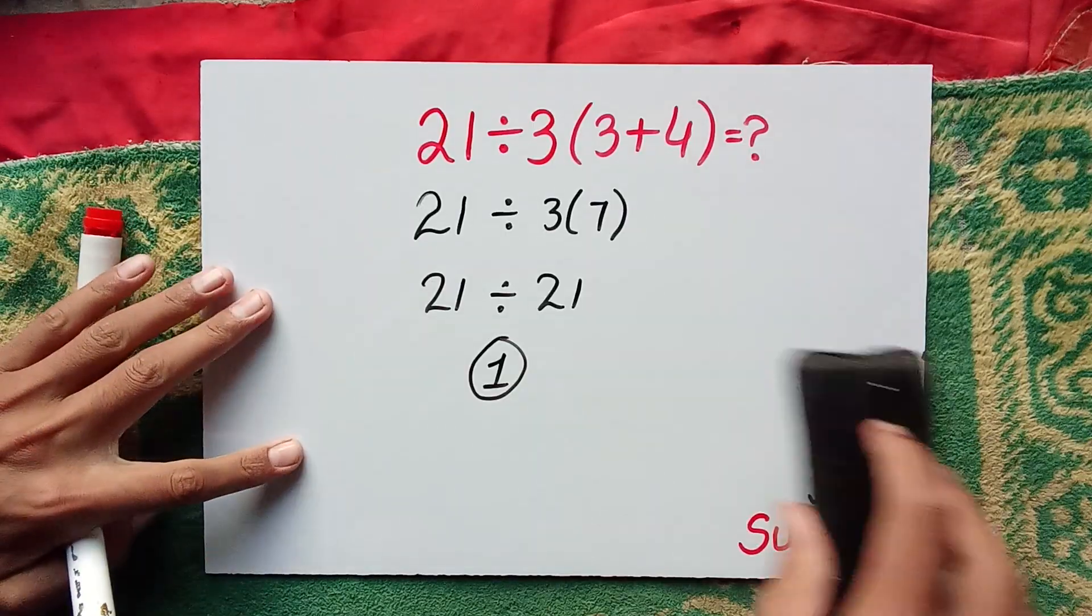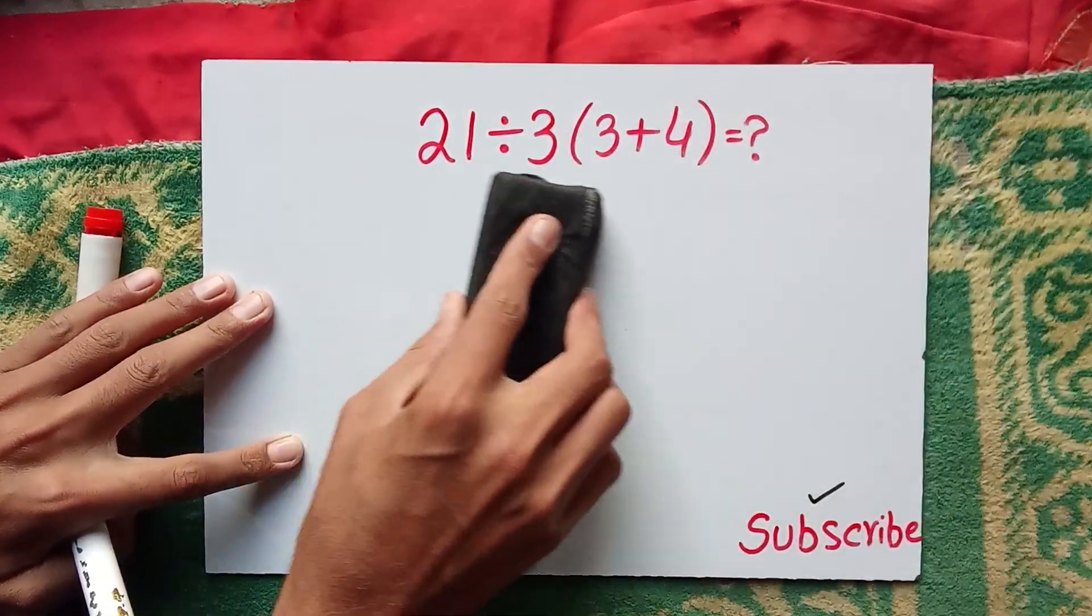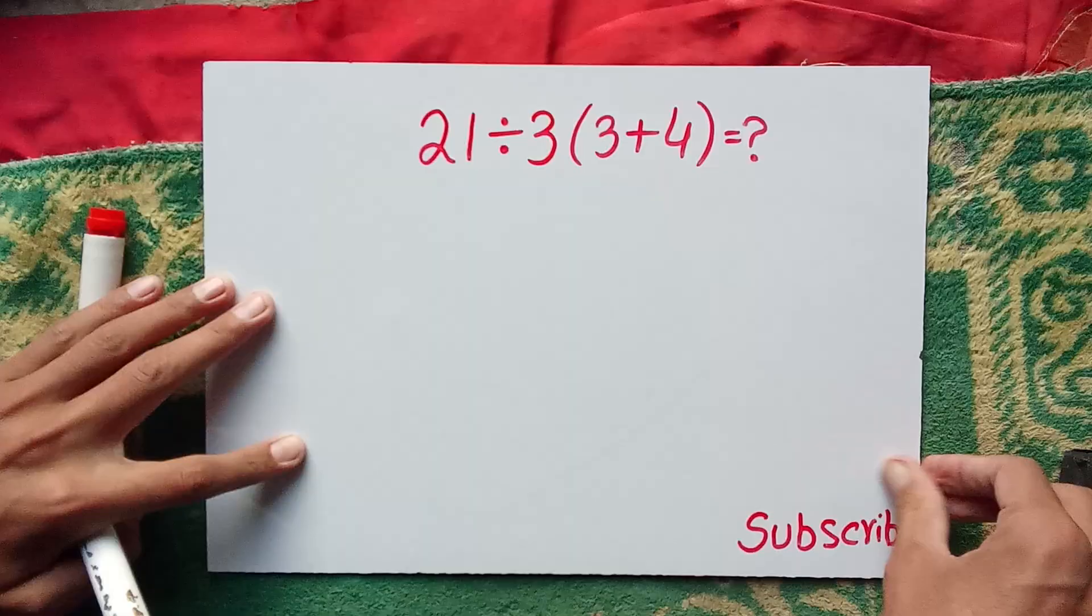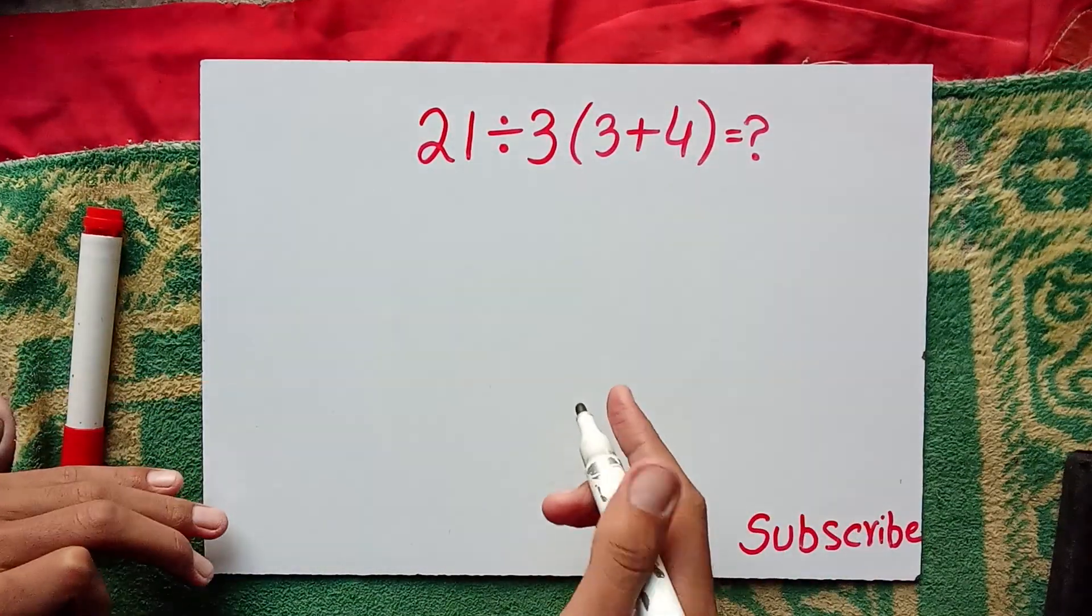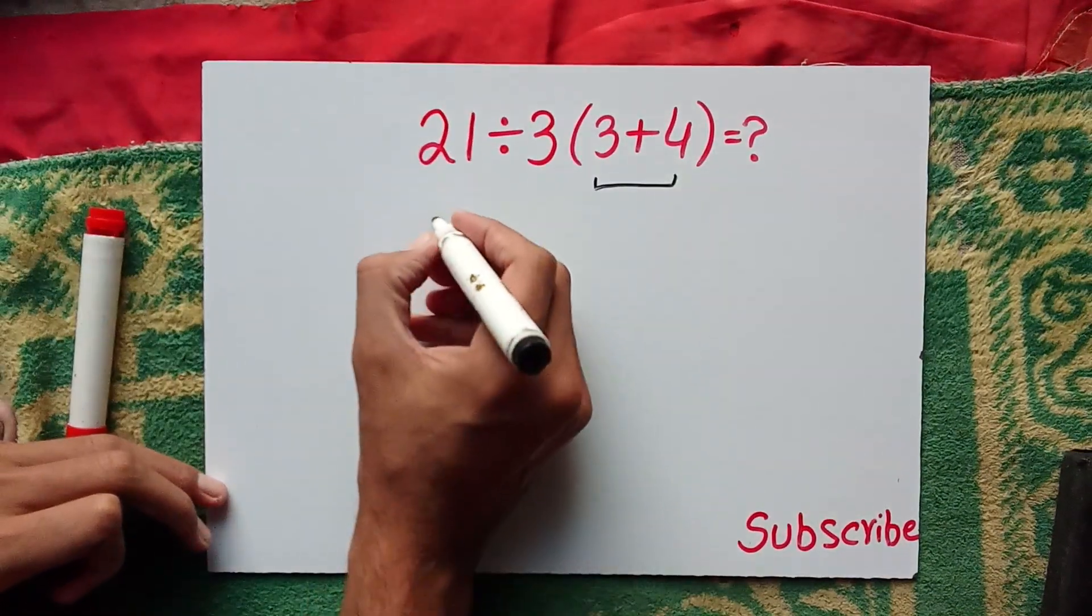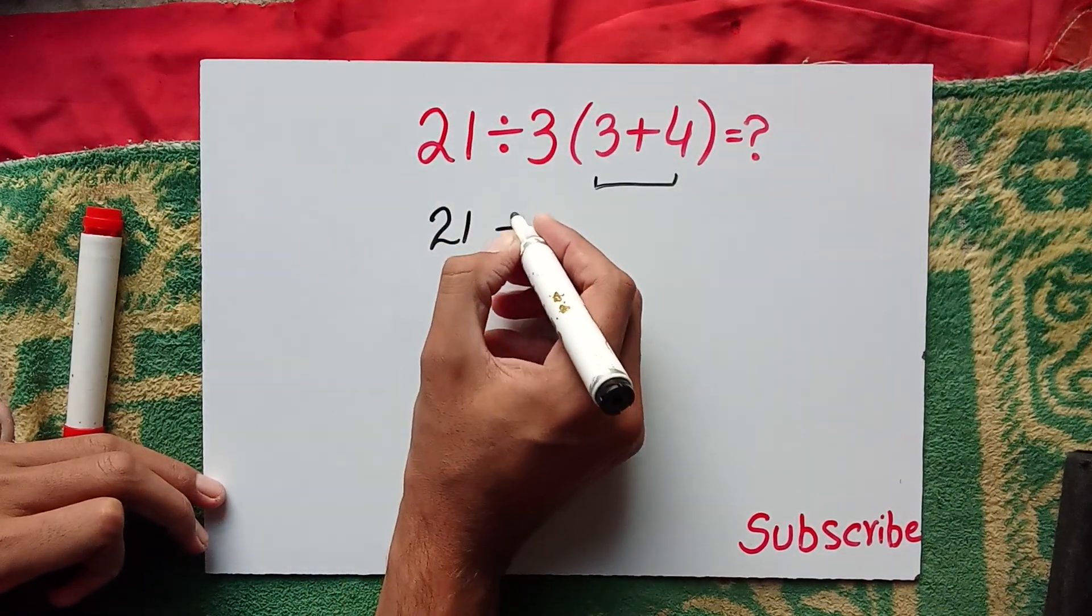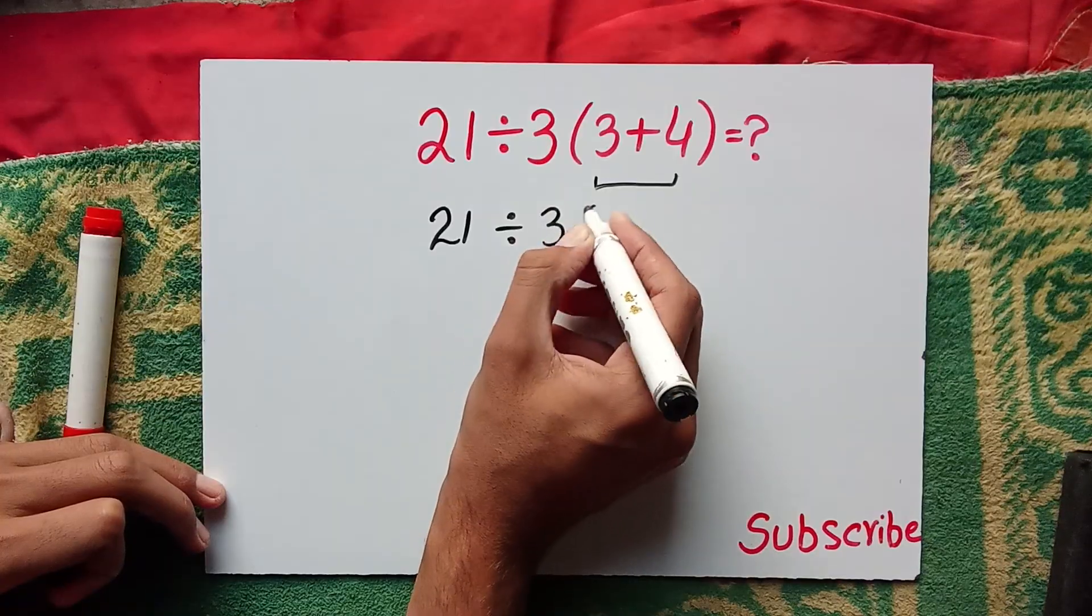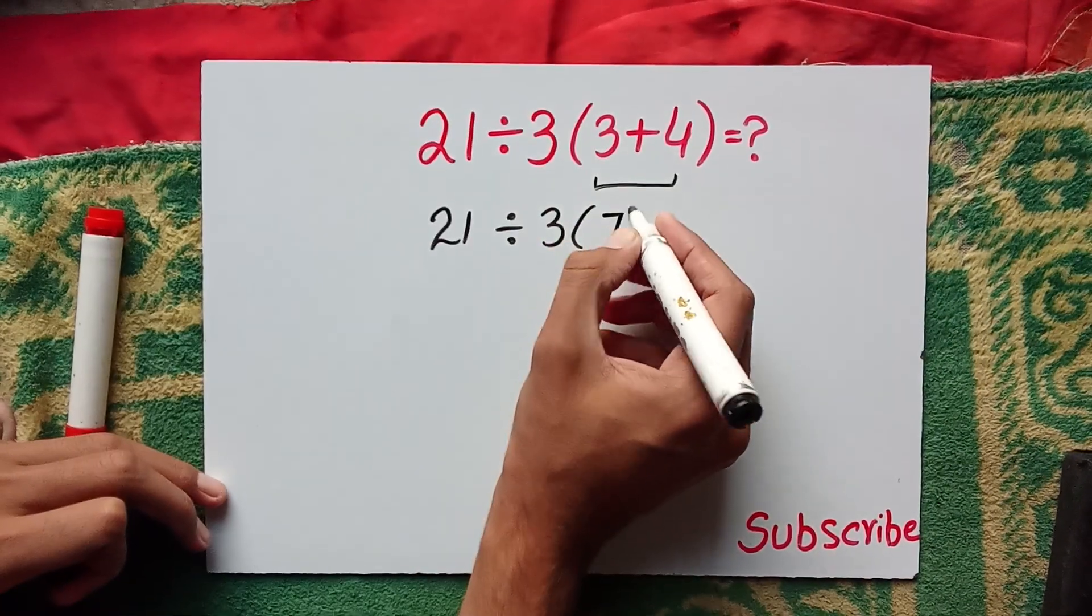Now I am going to solve this question using the correct method. According to the rule of PEMDAS, parentheses have higher priority than other operations. So first, 3 plus 4 equals 7, giving us 21 divided by 3 times 7.